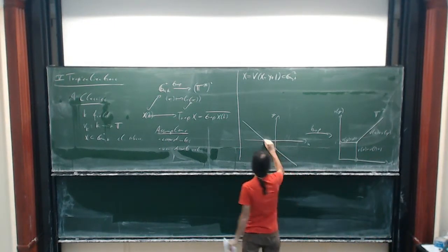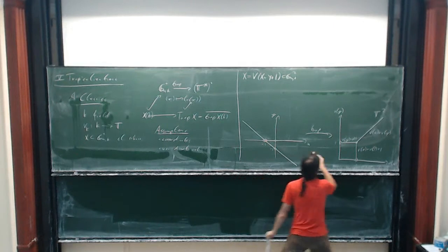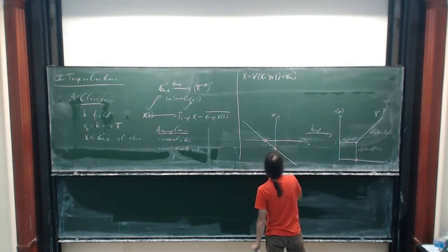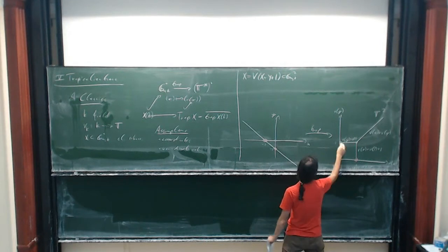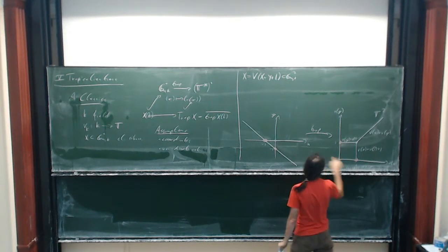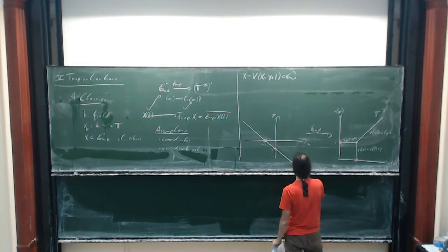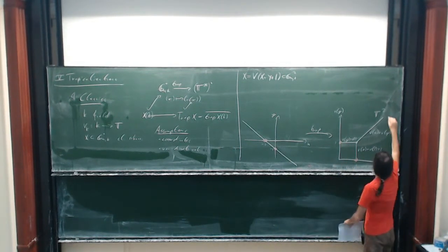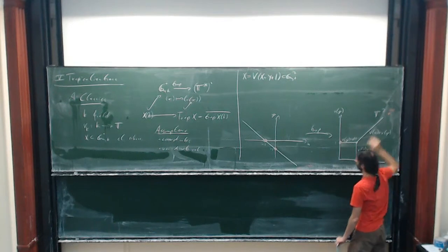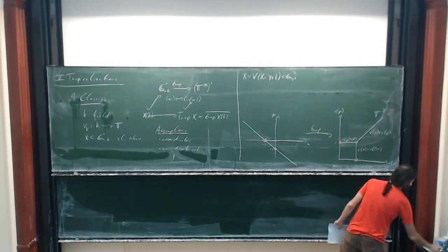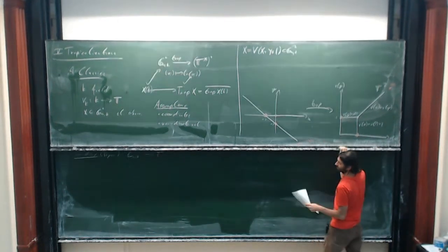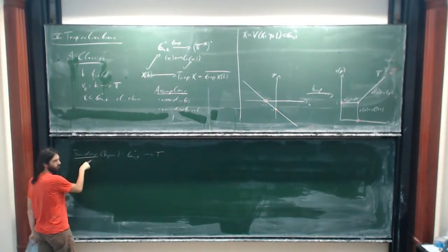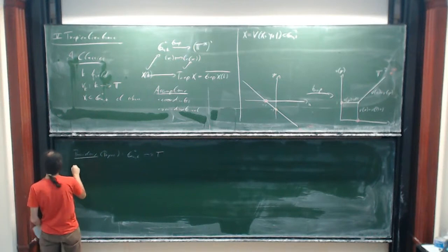Where x is zero we get this point, where y is zero we get another point, and also the point at infinity. A more intricate observation, done earlier, is that we can also generalize this to the boundary via Berkowitz spaces. I think this is due to Walter Gubler.